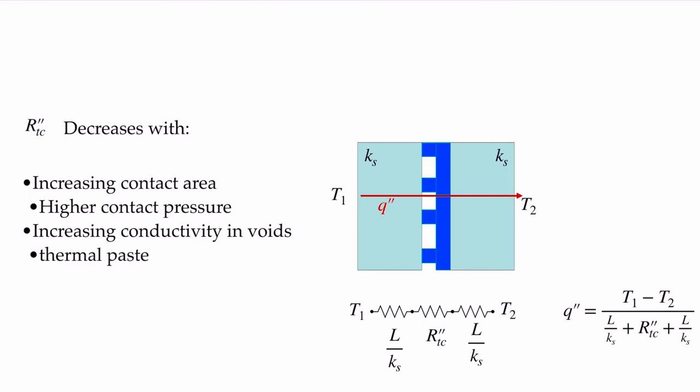It also increases with increasing conductivity of the voids. We saw that in the previous graphs. And so if we can fill this with a higher conductivity material, we will decrease the effect of the thermal contact resistance. This is a particularly important thing when we're thinking about a computer chip, and it's why we use a thermal paste.